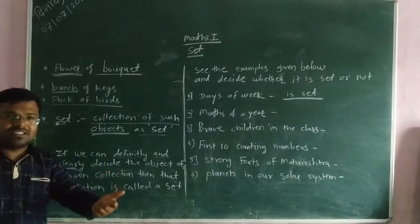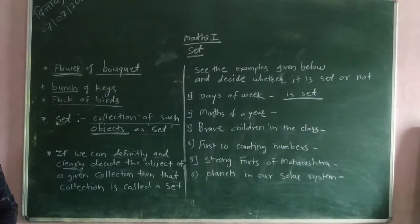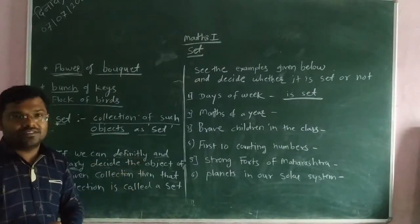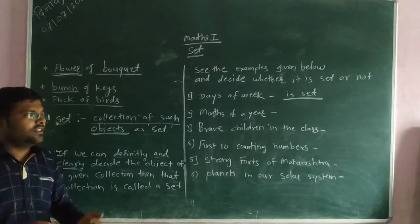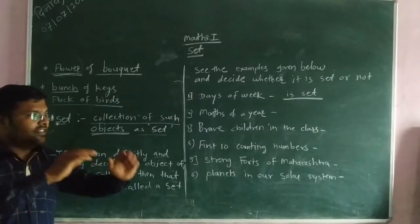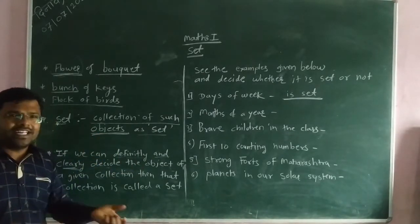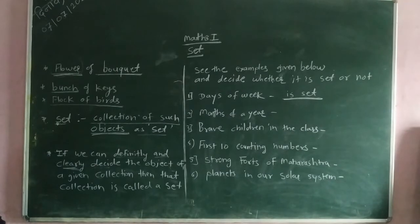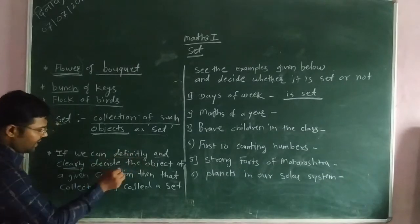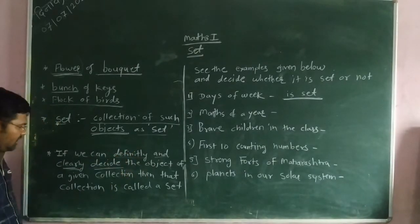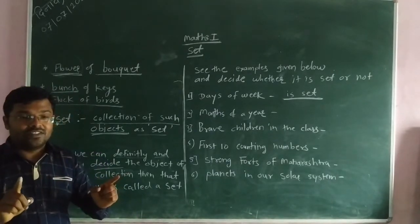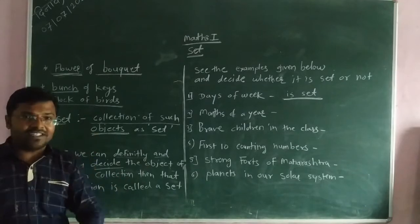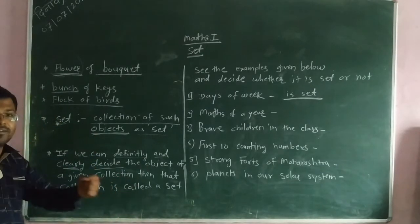For example, there is a piece — that is also a collection of objects. Our 9th standard students, students of our school — that is also a set. But here is given some definition: if we can definitely and clearly decide the objects of a given collection, we can say it is definitely not going to change. It is called a set.